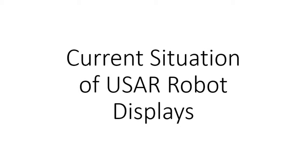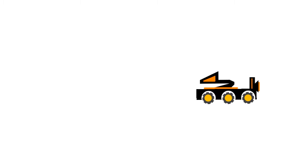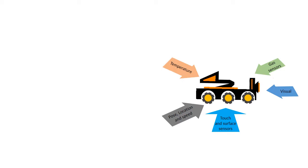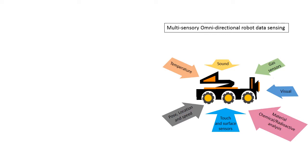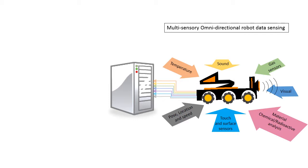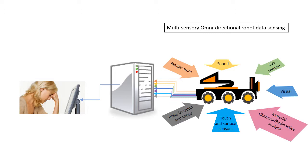What is the state of the art in terms of USAR robot displays? Starting from the robot or rover side: a USAR robot can have multiple types of sensors to capture a variety of data from the environment. The data is captured from all around the robot, not just from where it's looking. The raw data is then received and analyzed by one or more computers, located within the robot itself or remotely in the operator's computer. However, even though all data is sensed omnidirectionally by the robot, when it reaches the final user interface, it is all displayed together on a visual-only display.